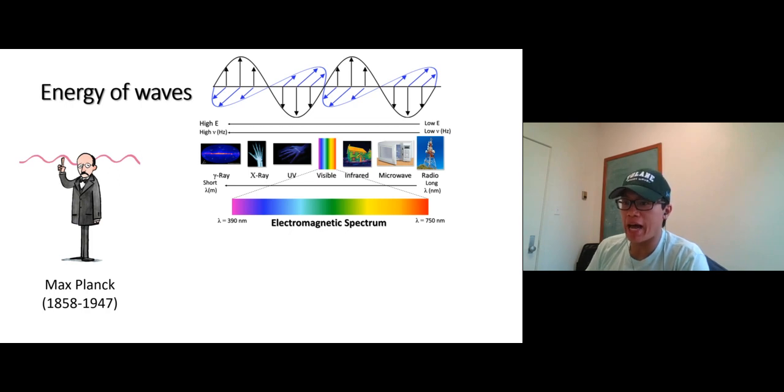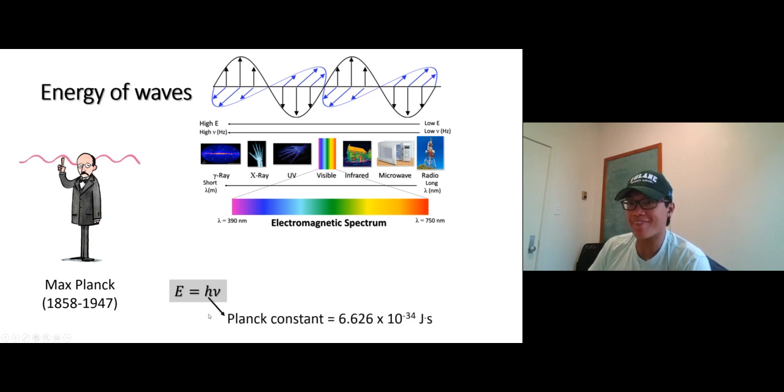If some of you remember, I mentioned in chapter three that Max Planck is a wave guy. He's really famous for it—got an equation for himself and a constant after his name, the Planck constant: 6.626 × 10⁻³⁴ joule-second.